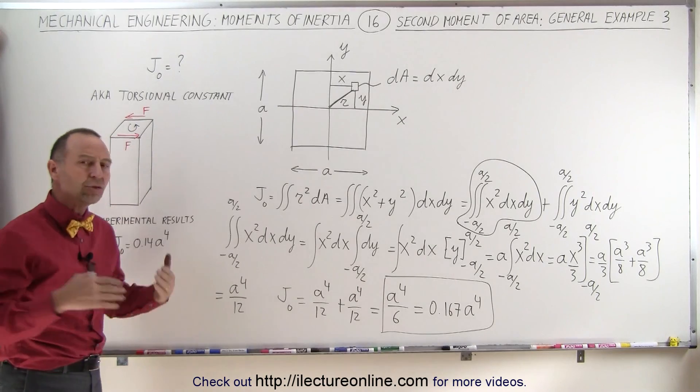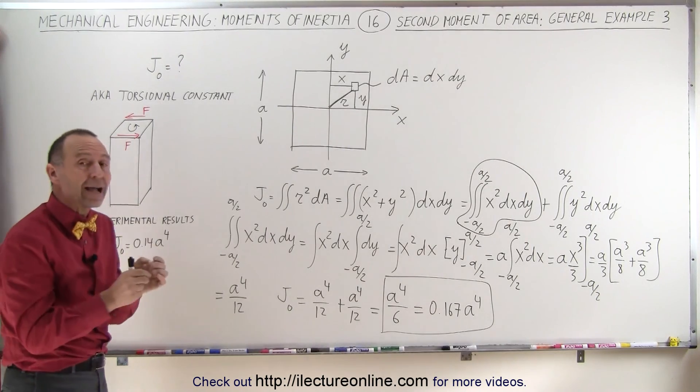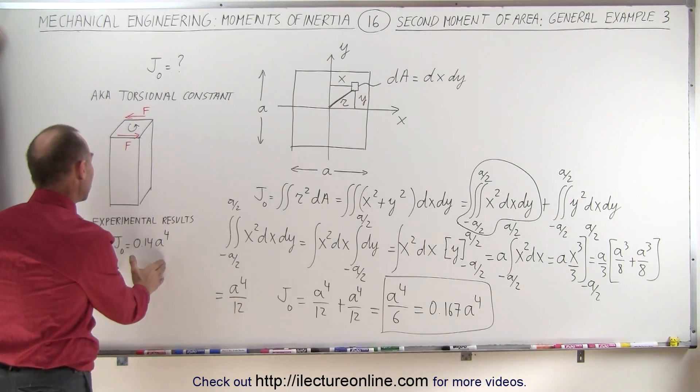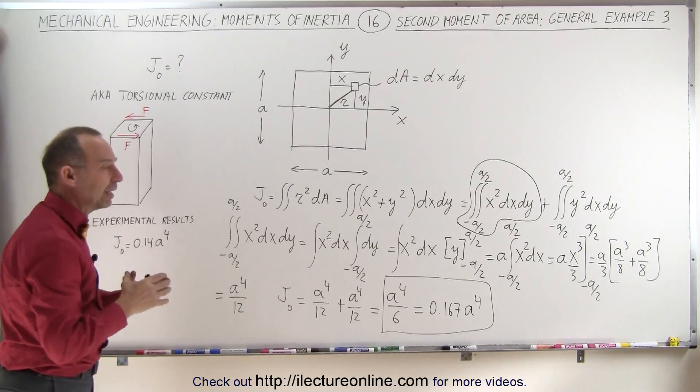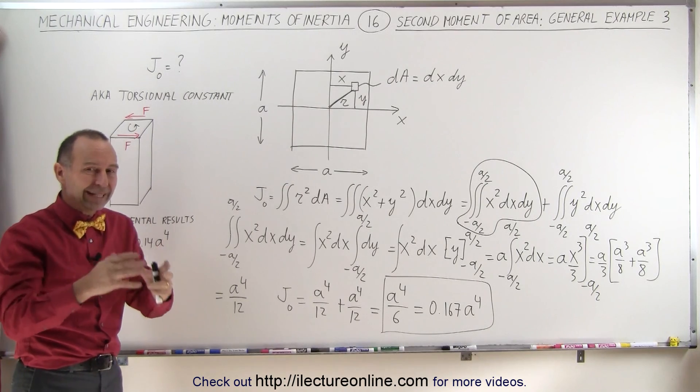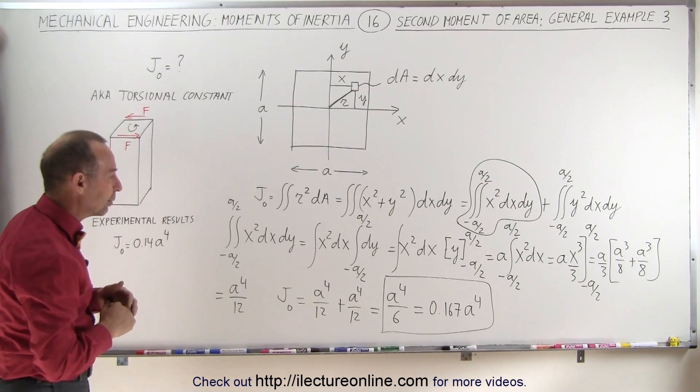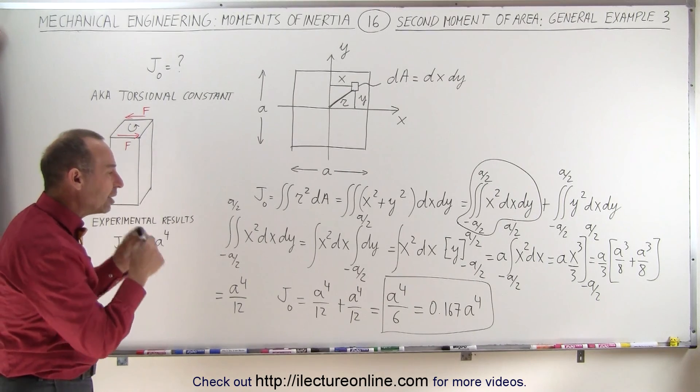Well, it turns out the only time that the analytical result ends up to be exactly the same as the experimental result is if the cross-section of the pillar is a circle, and that's the one that we calculated in a previous video. So when we have any other shape, we do notice that there's some difference between the analytic result and the actual experimental result.